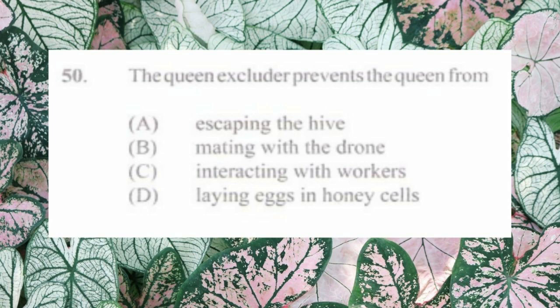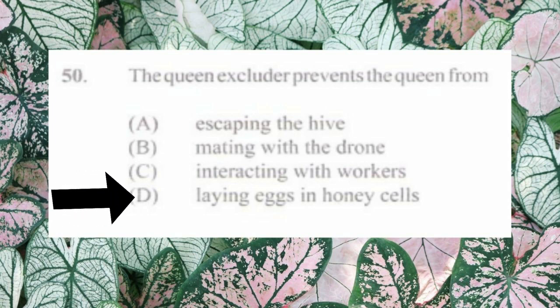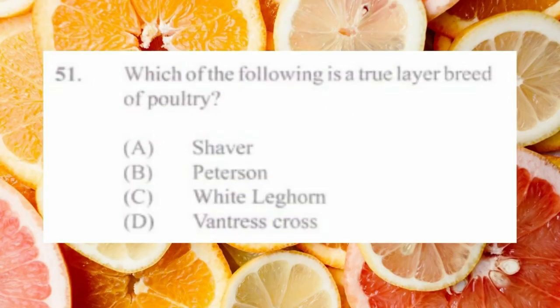Question number fifty: the queen excluder prevents the queen from a) escaping the hive, b) mating with the drone, c) interacting with the workers, d) laying eggs in the honey super. The answer is d) laying eggs in the honey super. The queen excluder is a mesh that only workers can pass through; during honey season it prevents the queen from entering the honey super to lay eggs.